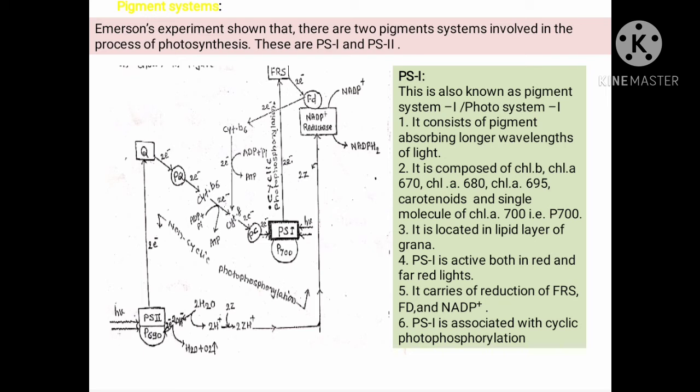PS1 is also known as pigment system first or photosystem first. It consists of pigments absorbing a longer wavelength of light. It is composed of chlorophyll B, chlorophyll A 670, chlorophyll A 680, chlorophyll A 695, carotenoids, and a single molecule of chlorophyll A 700, that is P700. It is located in the lipid layer of grana. Photosystem first is active both in red and far-red light. It carries reduction of FRS, FD, and NADP+. Photosystem first is associated with cyclic photophosphorylation.